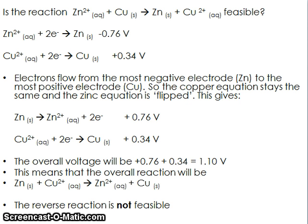We flip the sign on the zinc electrode: Zn²⁺ → Zn is −0.76, so the opposite equation Zn → Zn²⁺ gives +0.76. The overall voltage is 0.76 + 0.34 = 1.10 volts. So the reaction that happens is Zn + Cu²⁺ → Zn²⁺ + Cu. Looking back at our question, which asked if Zn²⁺ reacting with copper is feasible — we've just worked out that it's not. So in an exam answer, you would say: no, the reaction is not feasible.